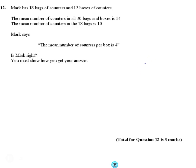Question number 12. We've got to keep our wits about us in this one because this is like a combined mean question, but it's kind of slightly the wrong way around. So there's counters, some are in bags, some are in boxes. We know the mean number of counters in all 30 bags and boxes combined is 14.